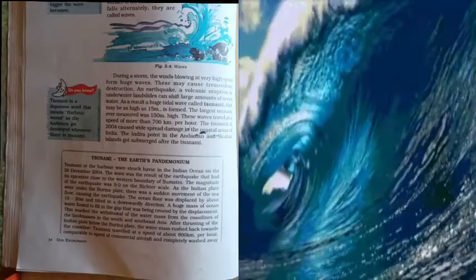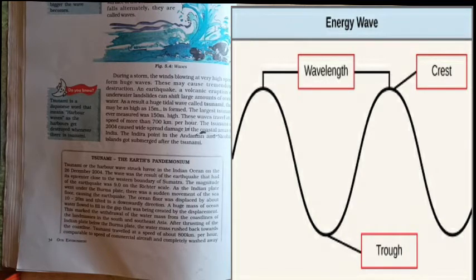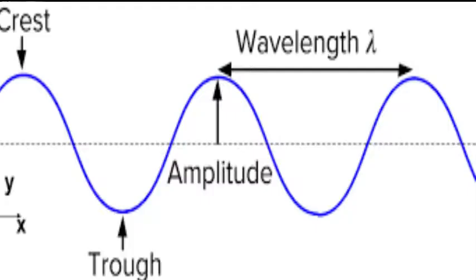An earthquake, a volcanic eruption, or underwater landslides can shift large amounts of ocean water. The highest part of the wave is called the crest and the trough. The distance from crest to crest or trough to trough is called the wavelength. The vertical height of the crest above the trough is called amplitude or height of the wave.